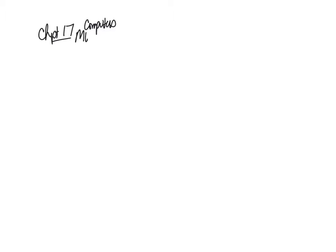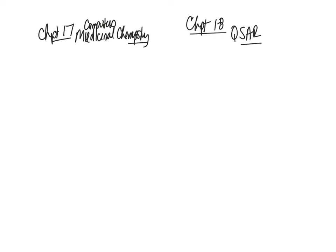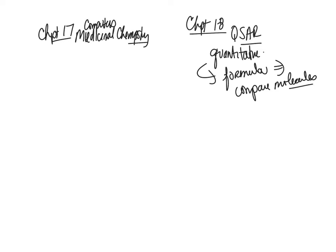Today we're going to combine chapter 17 — computers in medicinal chemistry — and chapter 18, which is QSAR. We talked about structure-activity relationships; the Q stands for quantitative. The goal for each quantitative structure-activity relationship is to generate a formula that can be used to quantitatively compare different molecules. A lot of times it's easier to make a decision on a molecule if you have a number.